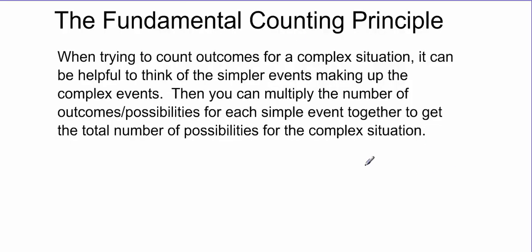This leads us to a principle in mathematics called the Fundamental Counting Principle. In simple terms: when we're trying to count outcomes for a complex situation — whether it's rolling a pair of dice or something even more complicated — it can be helpful to think of the simpler events that make up that complex situation. Then we multiply the number of outcomes for each simple event together to get the total number of possibilities for the complex situation.